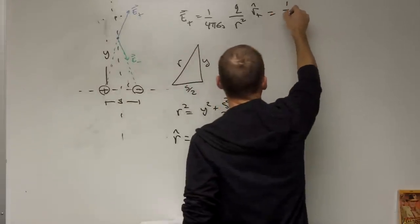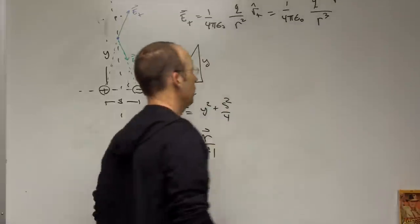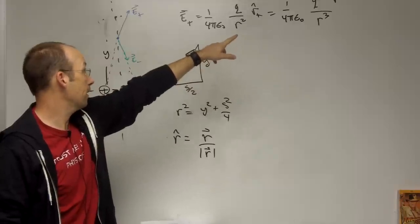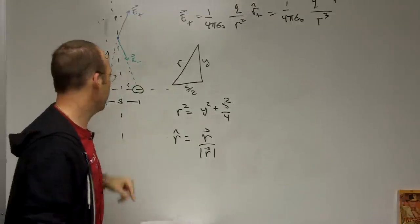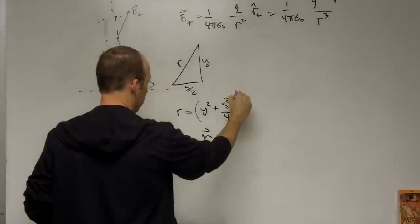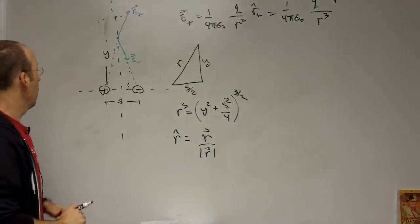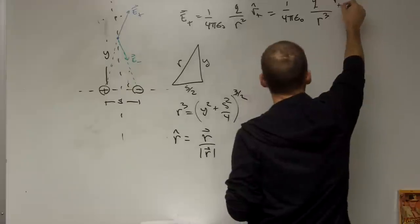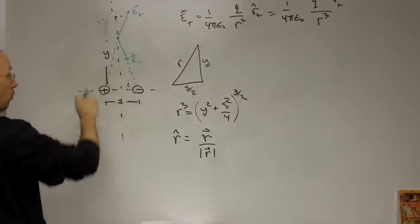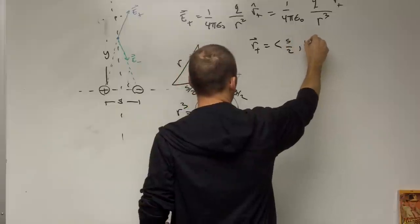I can rewrite the expression as one over four pi epsilon naught, q times the vector r over r cubed, since r hat equals r over |r| means I can replace r hat and put another r in the denominator, giving r cubed. The vector r_plus goes from the positive charge to the field point, so it has components s over 2 in the x direction and y in the y direction, giving r_plus = (s/2, y, 0).